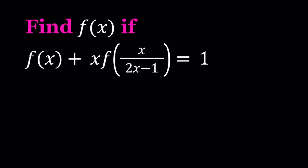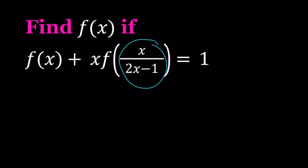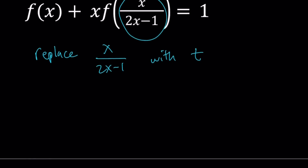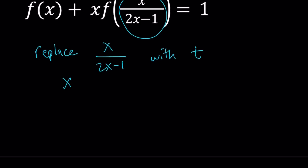We would like to find f of x, so let's see if we can get something like that from here. I'm going to show you the next steps and why I'm taking those steps, with a little bit of explaining. So let's go ahead and replace x over 2x minus 1 with another variable — how about t? Now let's see what that means: x over 2x minus 1 equals t.